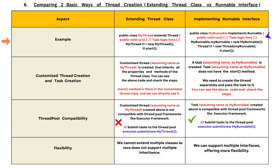Just listen carefully and understand. When we implement the Runnable interface, we have created a task. When we extend the Thread class, we create a customized thread. Refer and compare the lines of code for creating a thread by extending the Thread class versus implementing the Runnable interface.